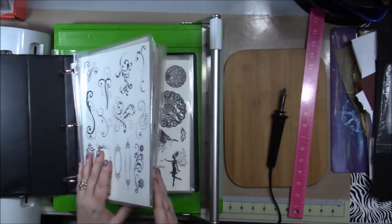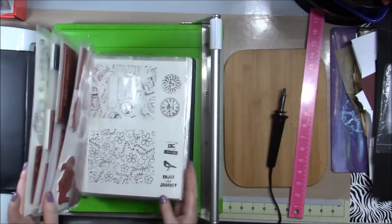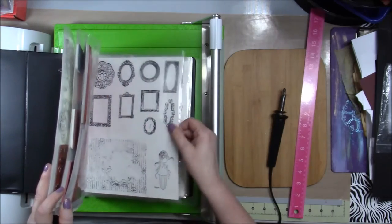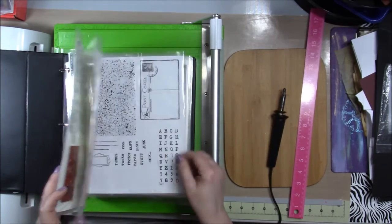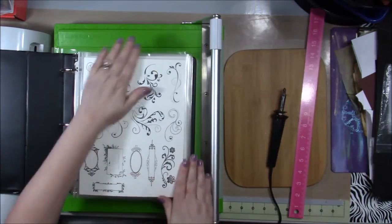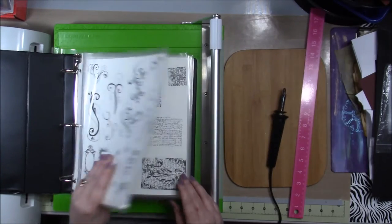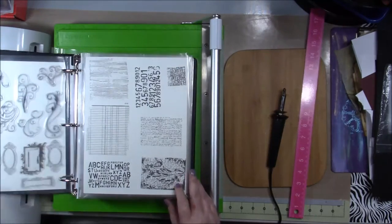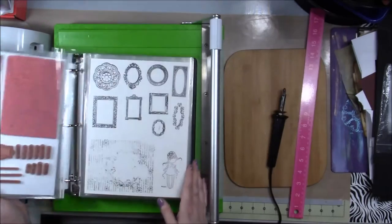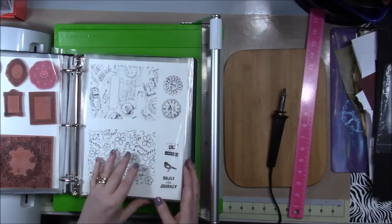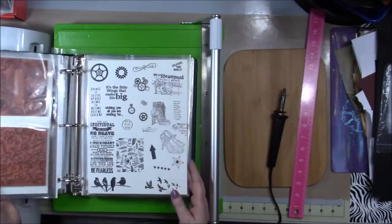So I have two books right now full of stamps and I need to go through and label them so I know what they are. But this way I can see exactly what the image looks like when it's stamped out. I can keep sets together, big background stamps, easy way to store those.